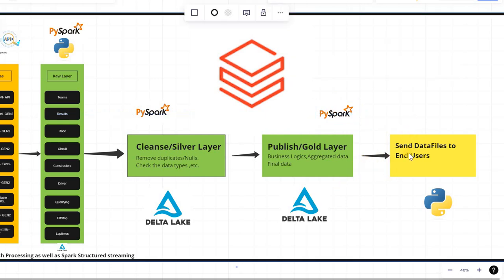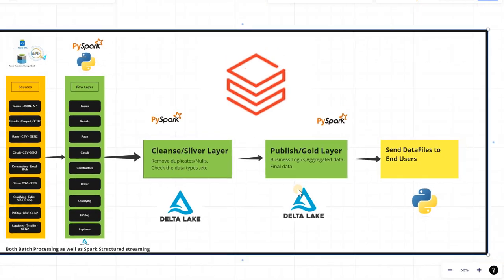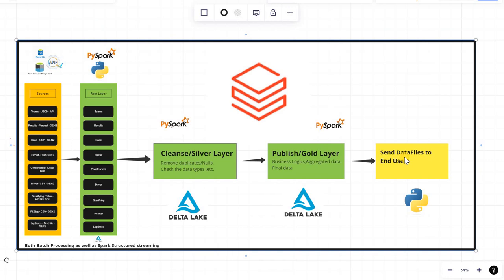At the end, we will be sending data files to our end users. In my previous project I used Logic App to send data files, but in this case I will be using a Python script instead, since we are working entirely within Databricks. For example, if a user wants the fact table or dimension table data in their Outlook or Gmail inbox, we will use a Python script to send it.